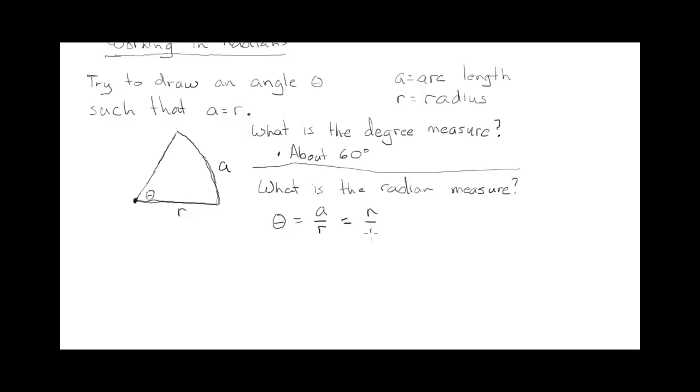So this angle theta, where R and A are equal, which is about 60 degrees, I'll tell you that it's actually a little bit less, is equal to 1 in radian measure. So we could call that 1 radian, if we wanted to put units on it.